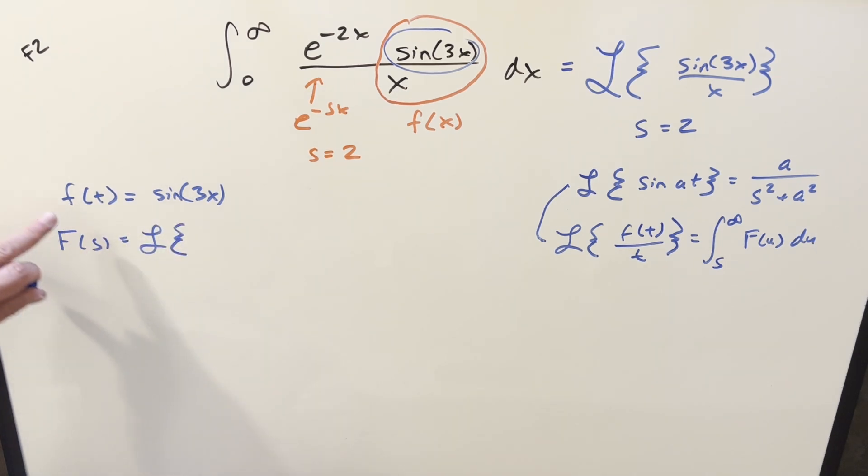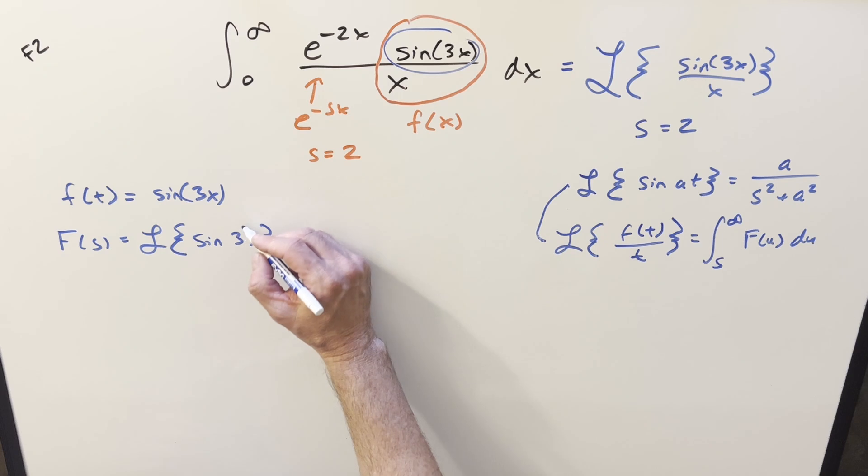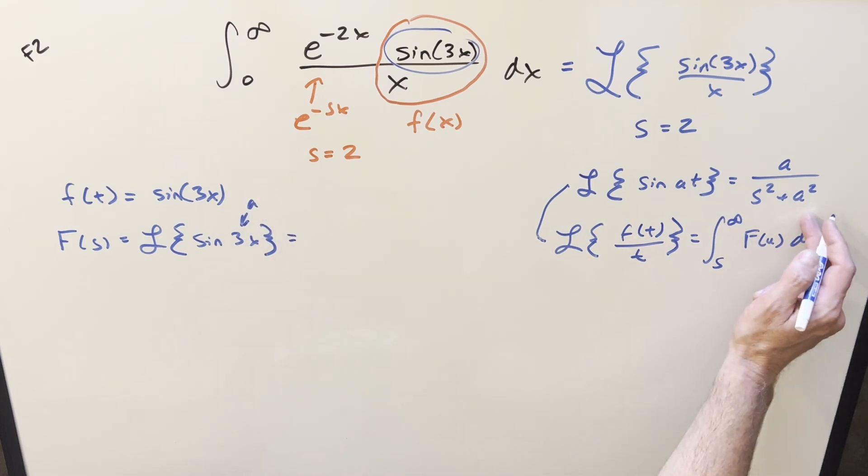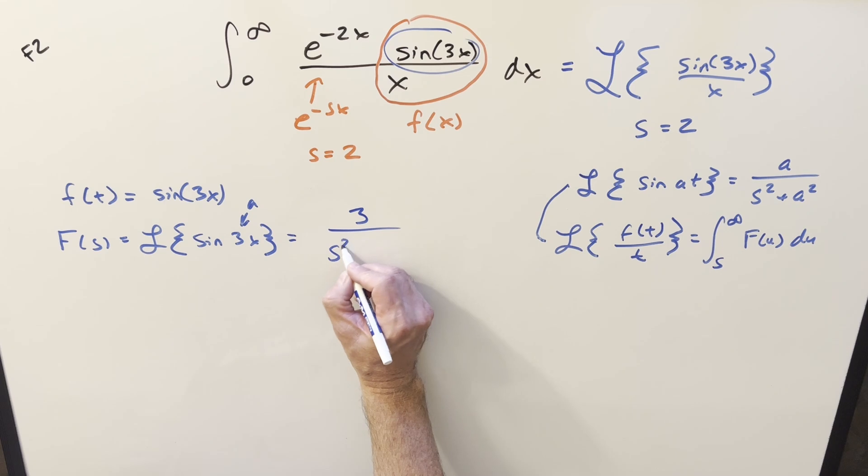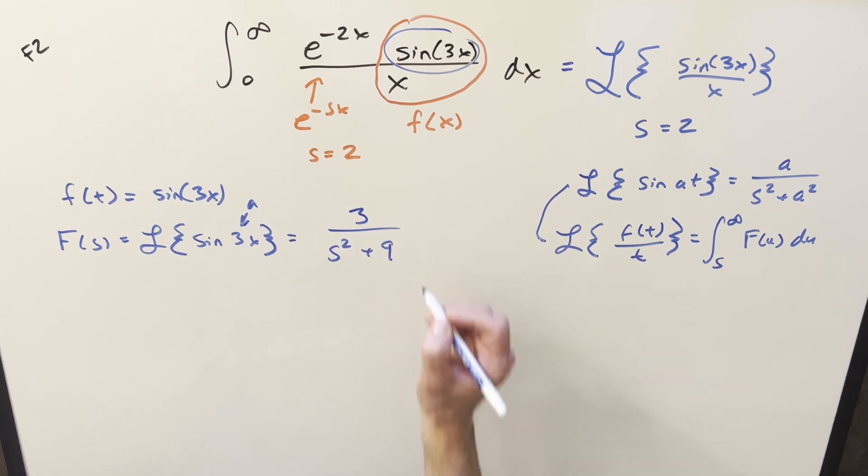So this is going to be the same thing as the Laplace transform of our f of t, which is just sine of 3x. We can get this value using this formula here, where this a value is going to be just 3. So we just plug in, and this is going to become 3 over s squared plus 3 squared, or 9.